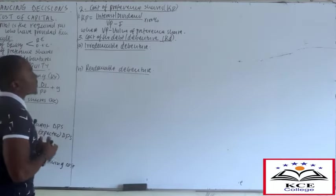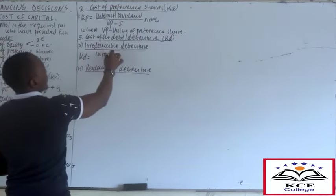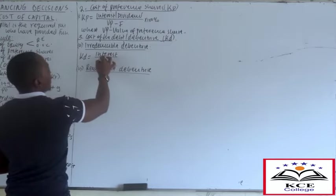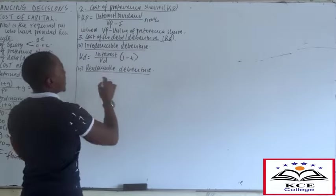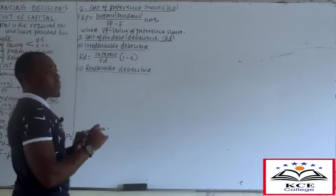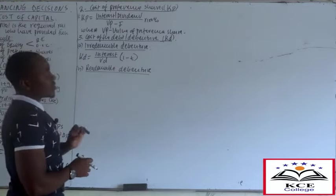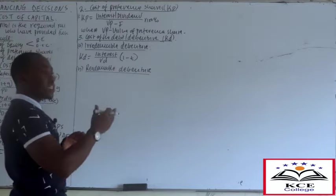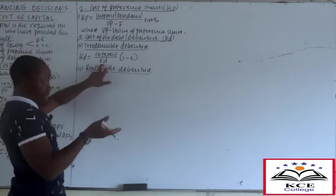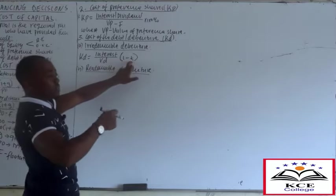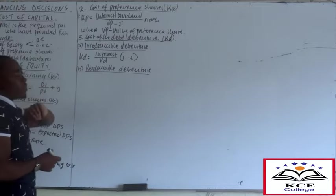For irredeemable debenture: KD = (Interest / VD) × (1 - T). We factor in (1 - T) because interest is deductible for tax purposes - we must factor in the interest tax shield benefit. VD is the market value of the debt, and the result should always be net of tax.